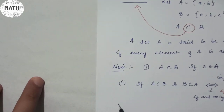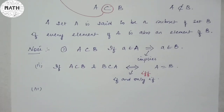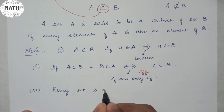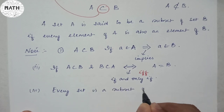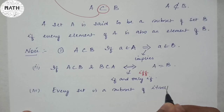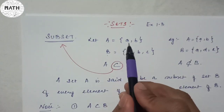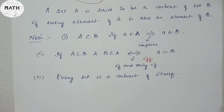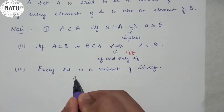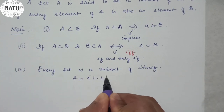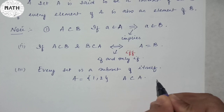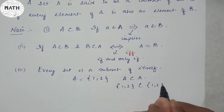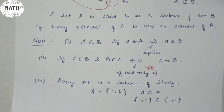Then comes point number three: every set is a subset of itself. In order to be a subset, every element should belong inside another element. So every set is a subset of itself. Suppose A is equal to {1, 2}. So I can say that A is a subset of A — that is {1, 2} is a subset of {1, 2}.